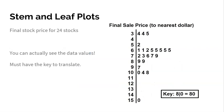Stem and leaf plots are another option. The advantage is you can literally see the actual numbers, whereas with a dot plot you just see a dot. Here are the final stock prices at the end of the day for 24 stocks. The key is really important — a '3 | 4' could mean 34, 34,000, 3.4, or 0.34, so the key defines the stems and leaves. With the key showing '8 | 0 = 80', we can read values like 34, 35, 52, 61, and so on.